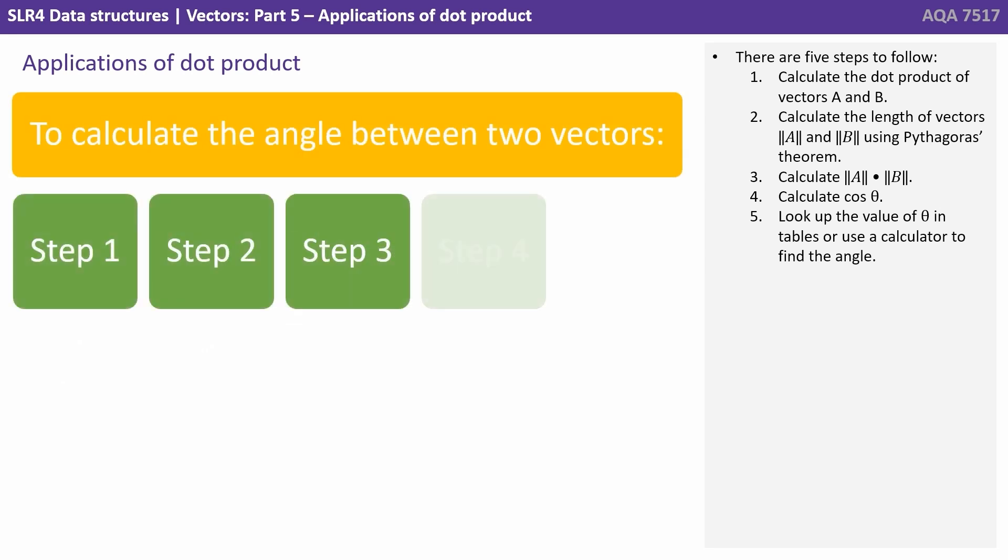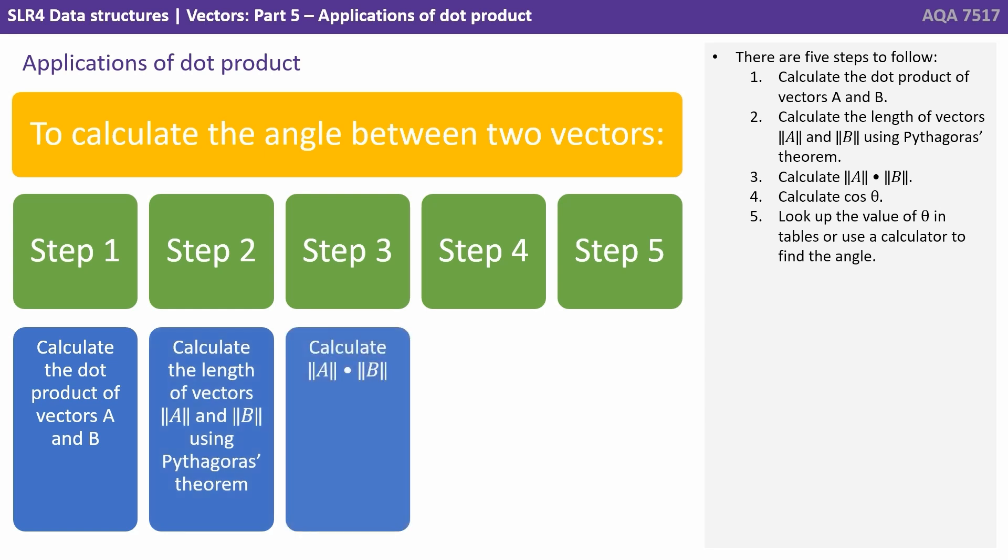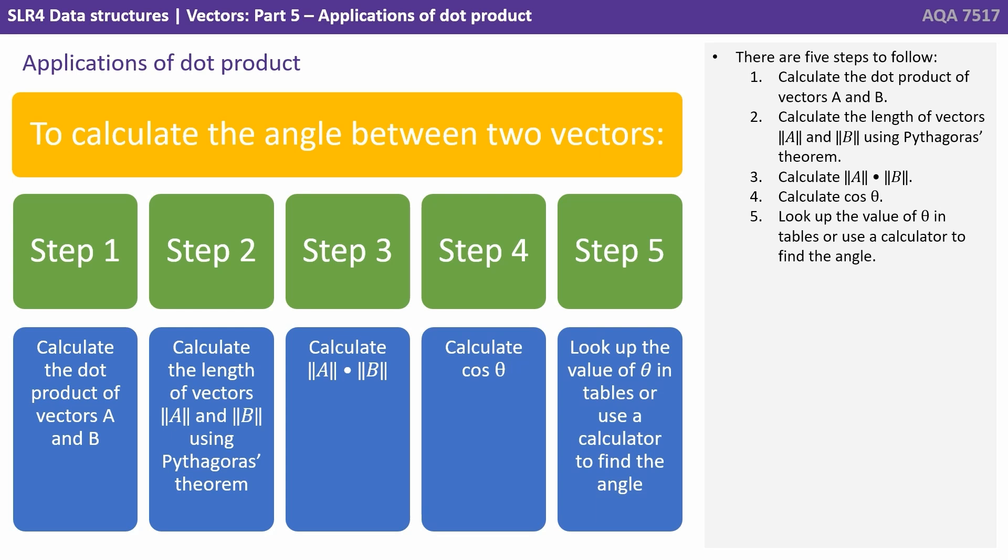There are five steps to follow. One, calculate the dot product of A and B. Two, calculate the length of vectors A and B using Pythagoras' theorem. Three, calculate ||A|| and ||B|| together. Four, calculate cos θ. And five, look up the value in tables or use a calculator to find the final angle.